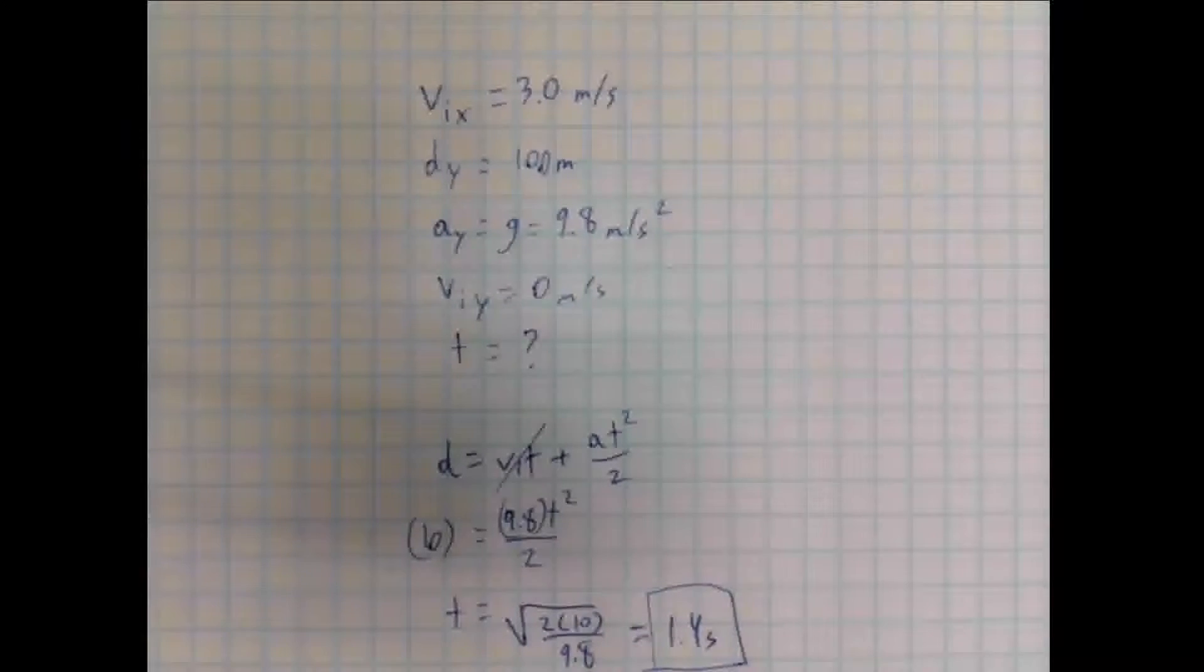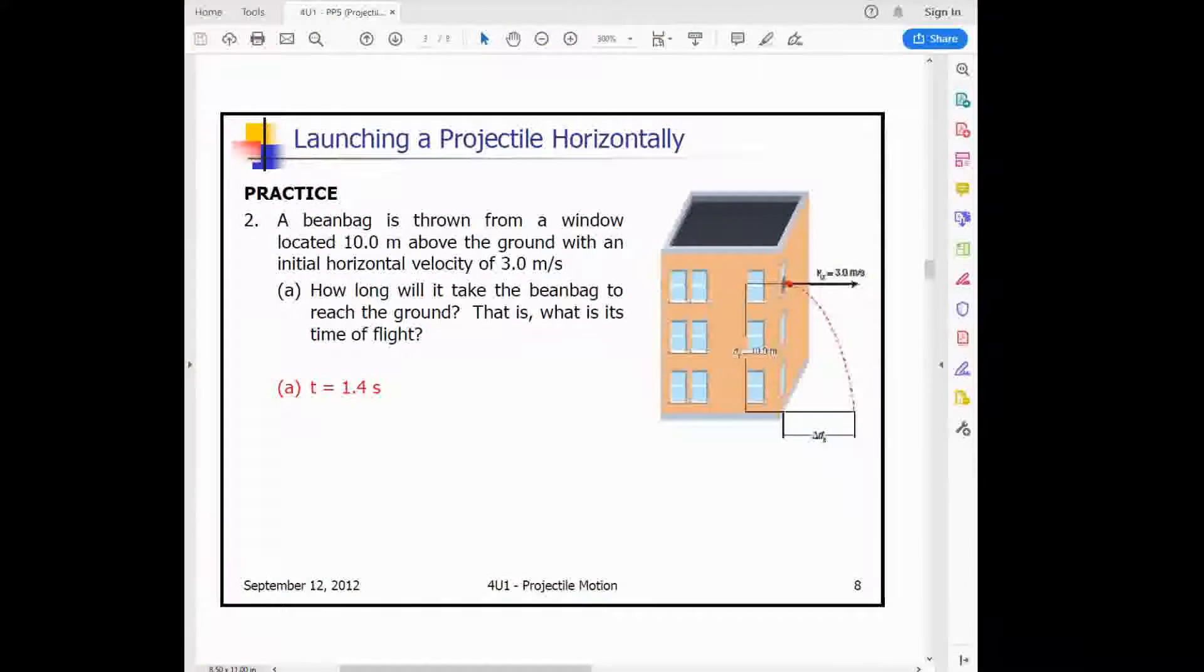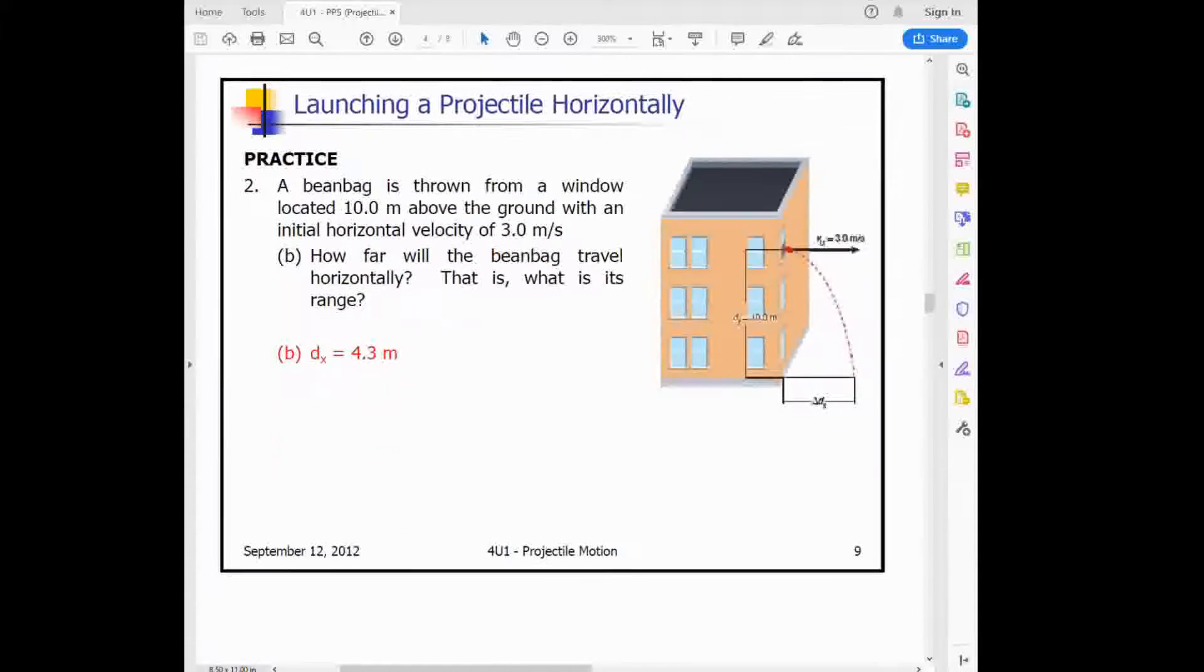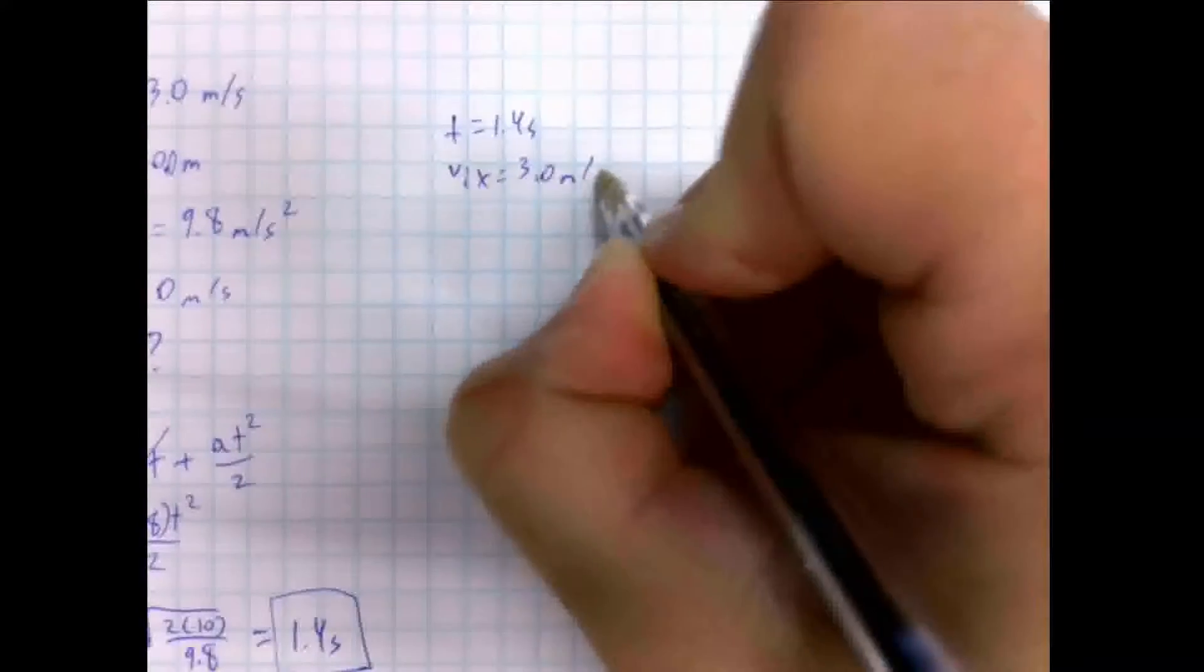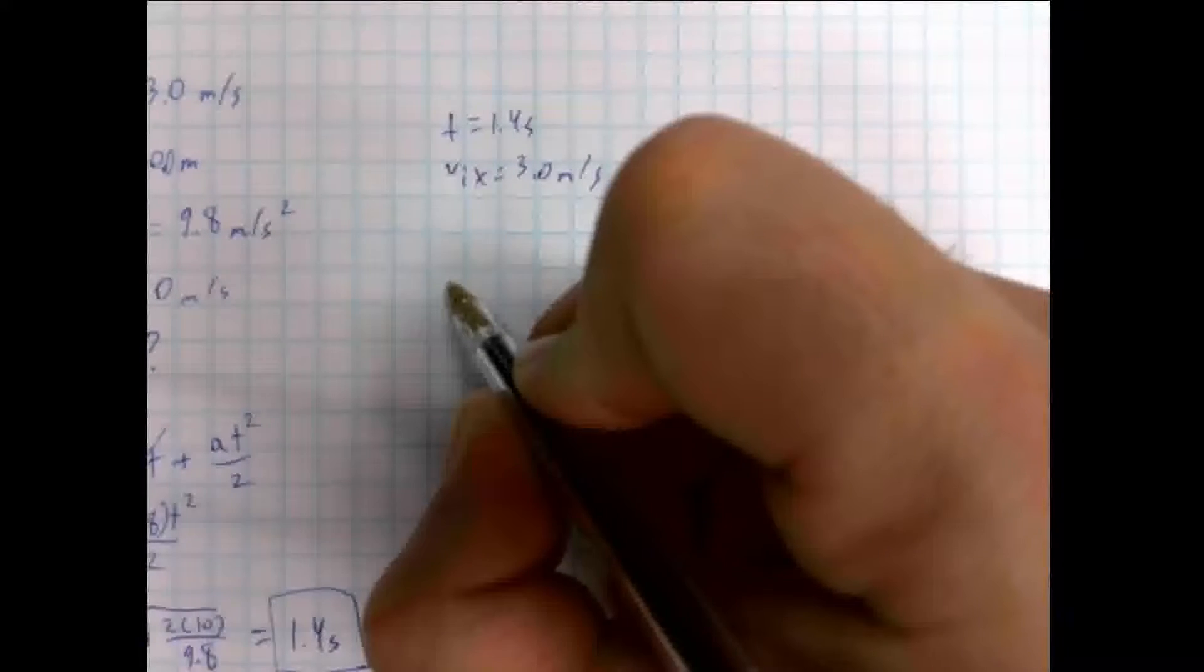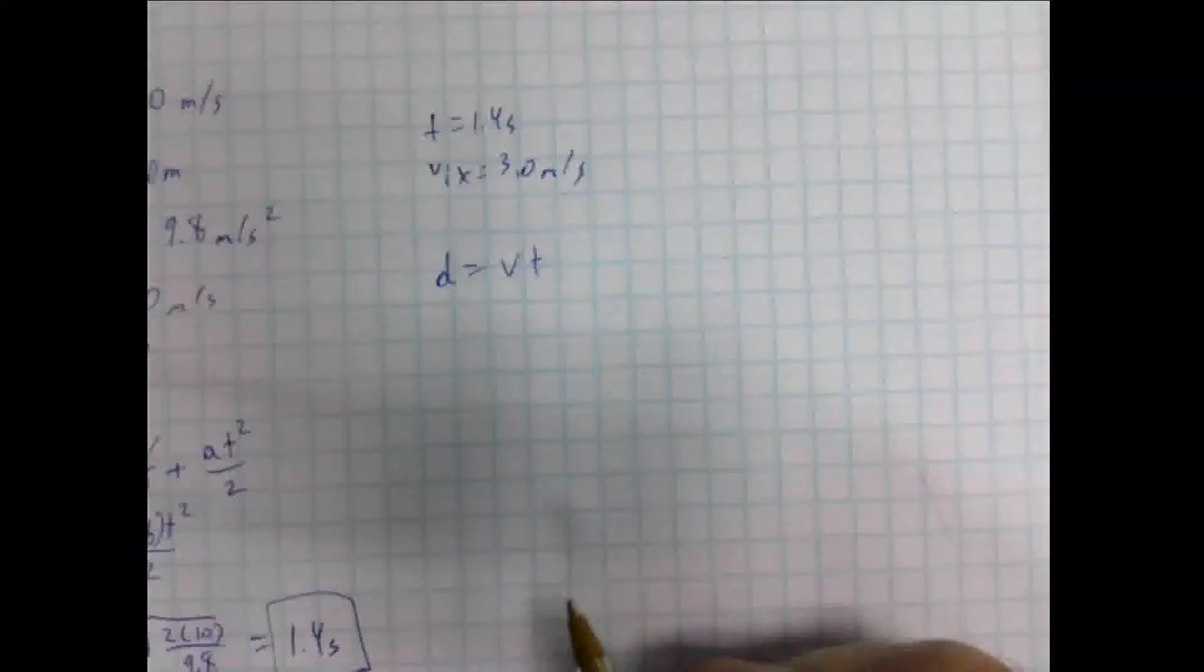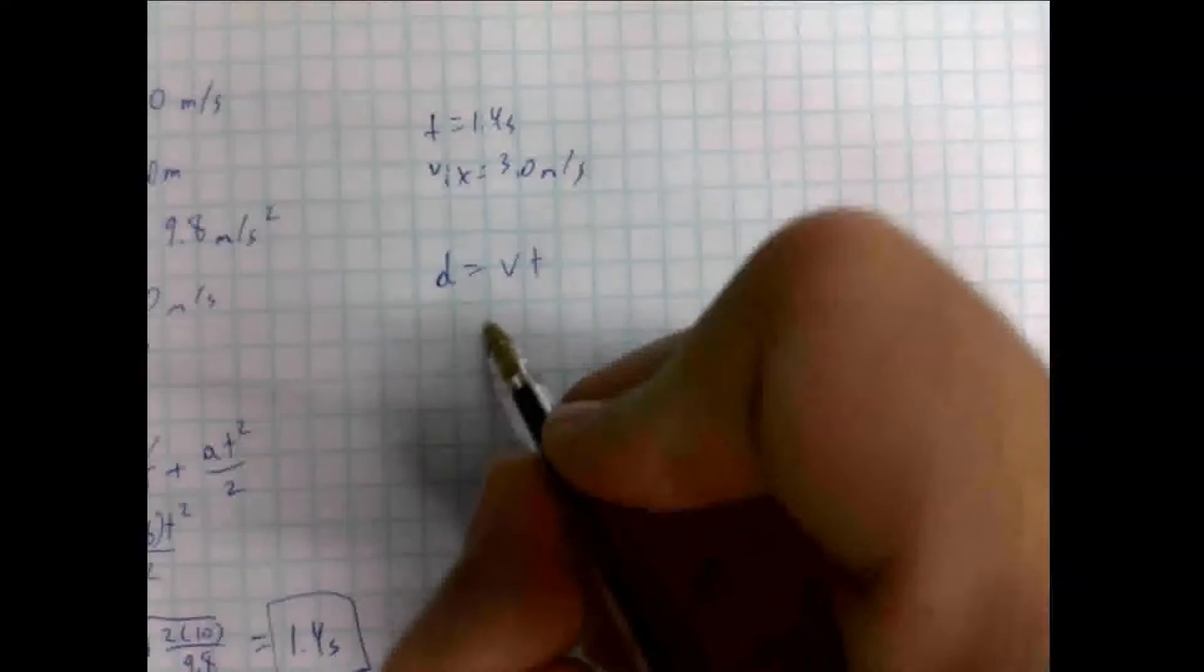We'll be covering significant digits after the first quiz and test. For now, use whatever you've been taught in grade 11 physics. But I'll be more strict on that later. The second part of this question asks, how far will the beanbag travel horizontally? What is its range? To find the range, we know the time is 1.4 seconds. The vix, which we didn't use previously, we will need to use now. We know that d equals vt. The displacement is equal to velocity times time because there is no acceleration.